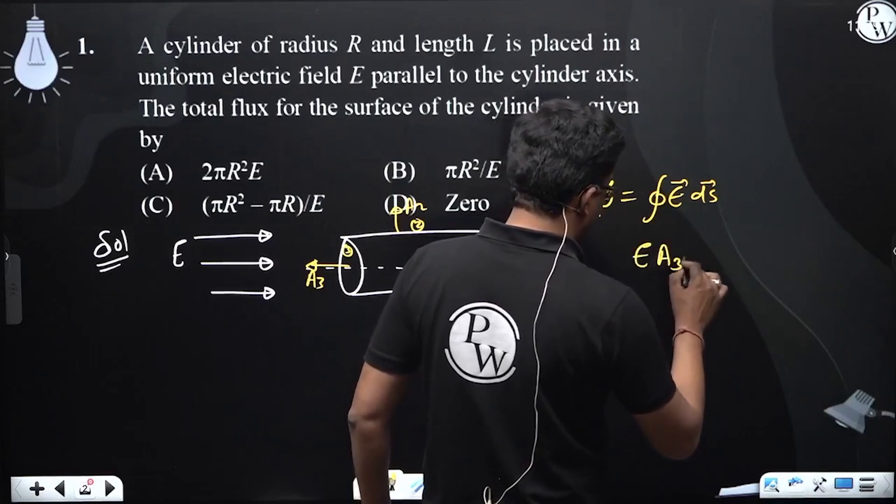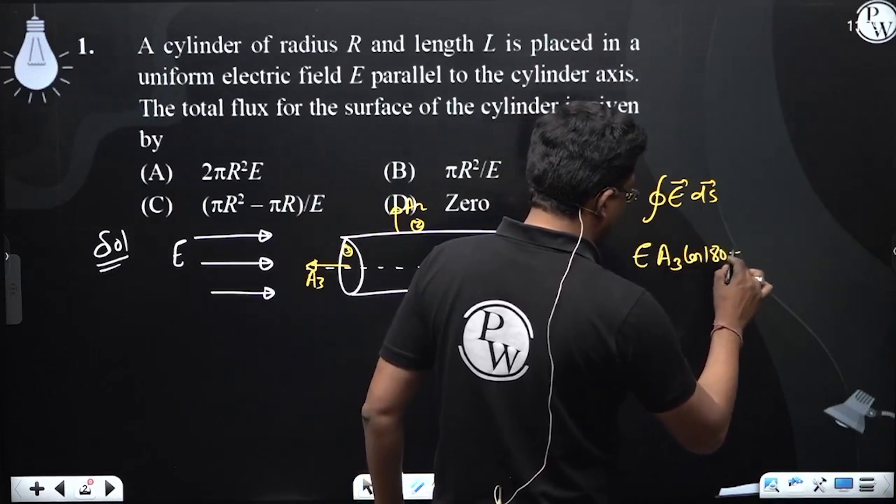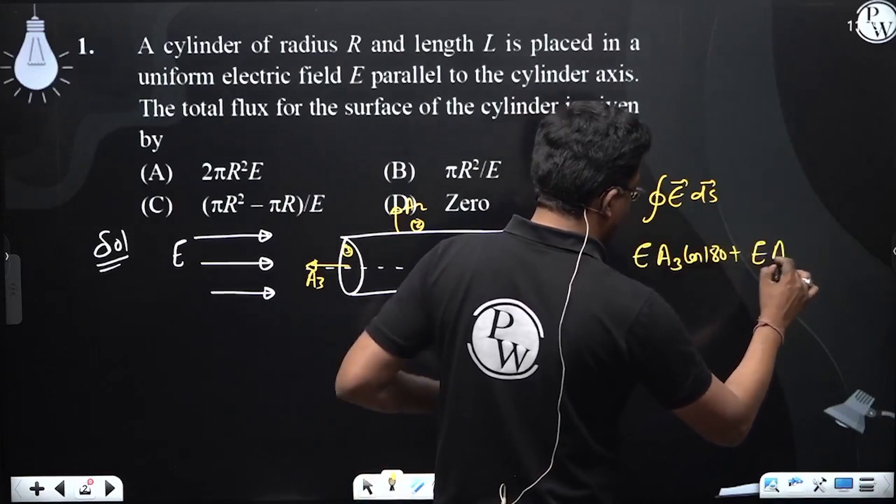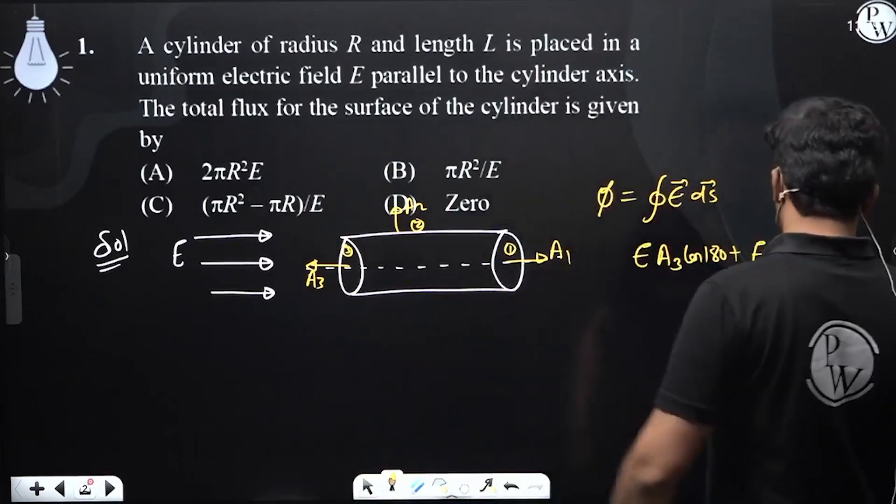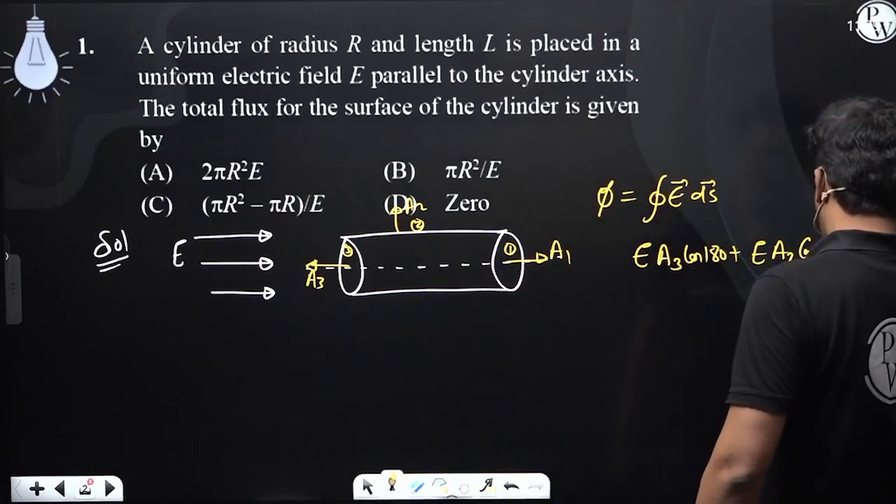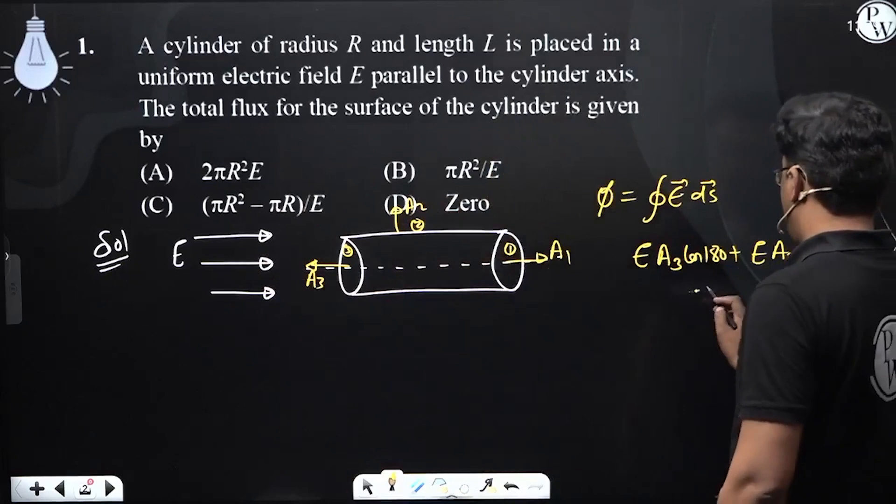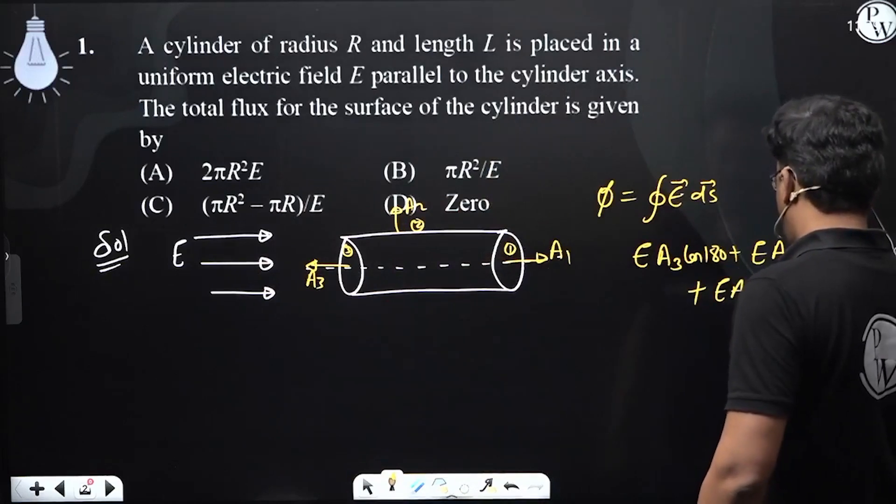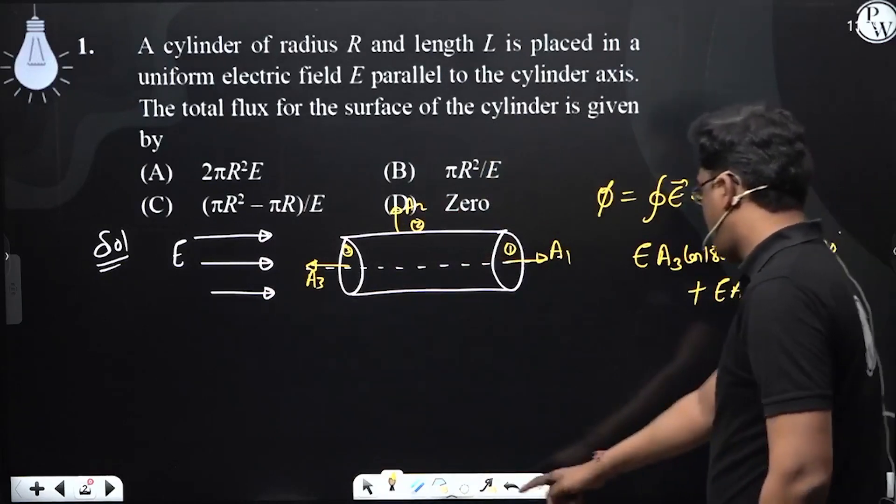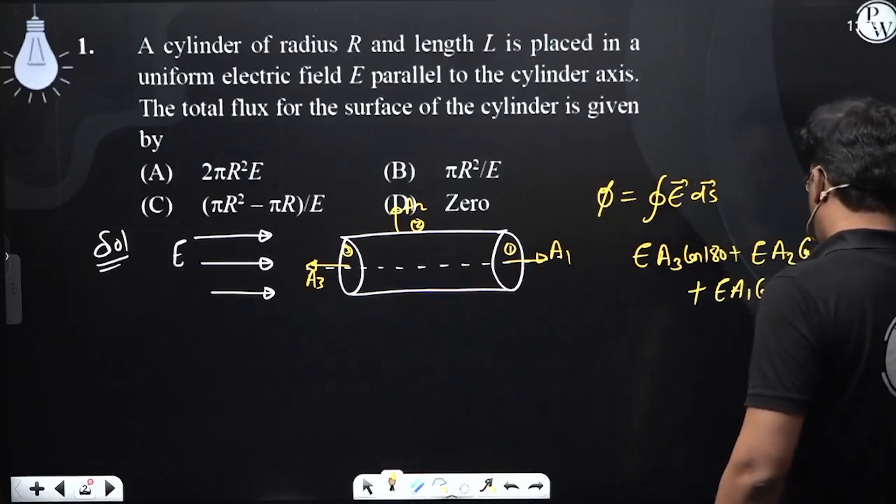E A3 cos 180 plus E A2 cos 90 degree, because A2 is perpendicular to that of electric field plus E A1 cos 0 degree.